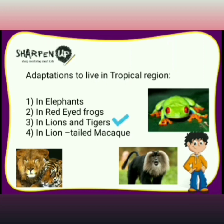Lions and tigers have body colors that merge with their surroundings, helping them camouflage and catch their prey. They have sharp eyesight to locate prey from a distance and a sharp sense of smell to also help locate prey. They can also run very fast to catch their prey. The red-eyed frog has sticky pads on its feet that help it climb trees. During daytime, it camouflages by remaining motionless, shutting its eyes, and squeezing its feet under its green body to escape predators.